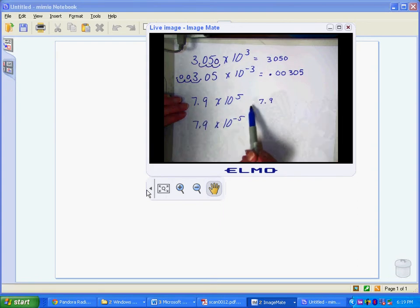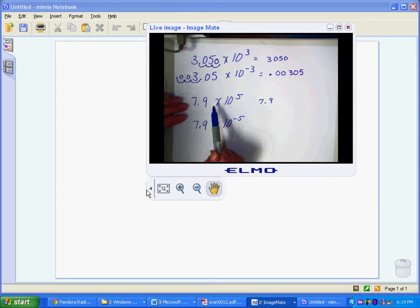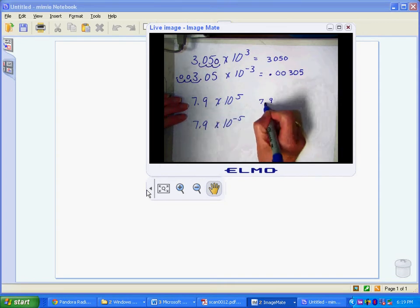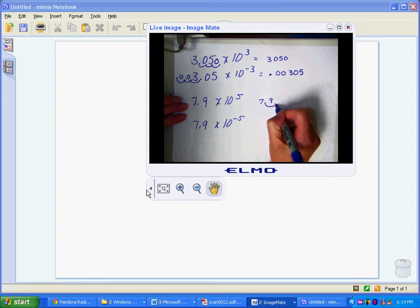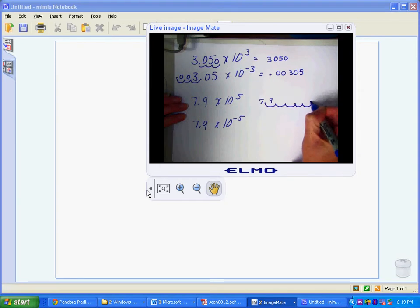If I move it five places this way, I'm going to come out with a number that's less than 1. So we know that's not correct. So I'm going to have to move it over five places this way: 1, 2, 3, 4, 5. And I'm just going to fill in my holes with zeros.